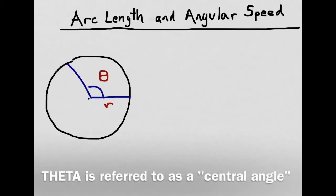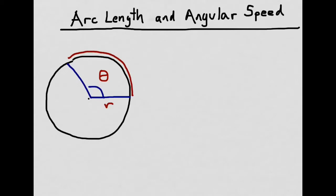we'd like to understand the relationship between theta and r and the arc length of the circle that's subtended by that angle.